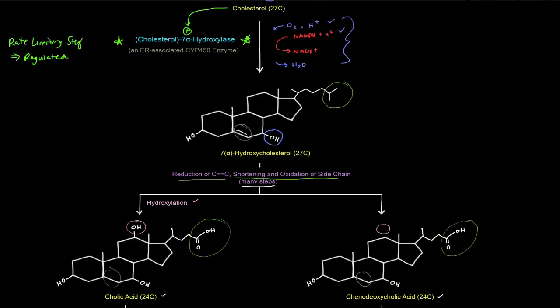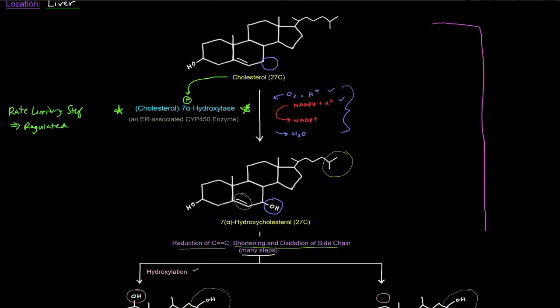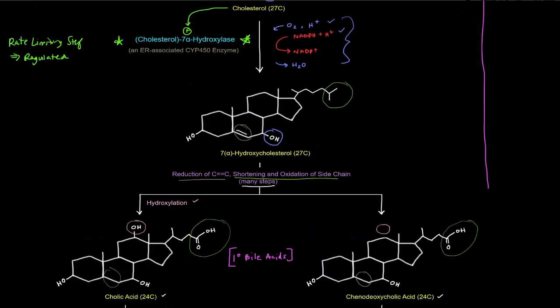These two compounds are bile acids — specifically, they are primary bile acids. They are the first bile acids that are made and are the product of the bile acid synthesis pathway, which runs from cholesterol all the way to these primary bile acids. These bile acids feed back negatively on the hydroxylase enzyme that catalyzes the rate-limiting step in their production. That covers bile acid synthesis. We also mentioned making bile salts through conjugation, so let's scroll down to see what's going on there.